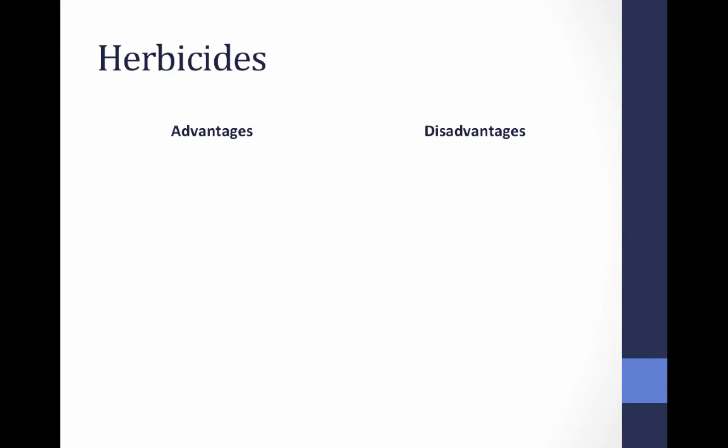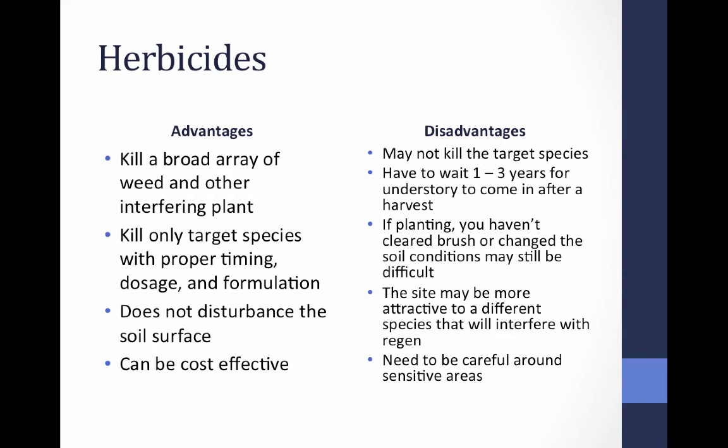What are the advantages of using herbicide? It can kill a broad array of weeds and other interfering plants. With proper timing, dosage, and formulation, it kills only target species. It does not disturb the soil surface — which is very different from the impacts of mechanical site prep. It can also be pretty cost effective, and can be used to really narrow in on certain spaces — for example, targeting invasive species.